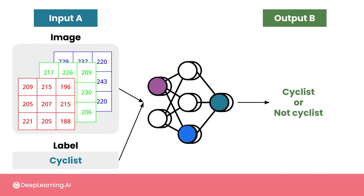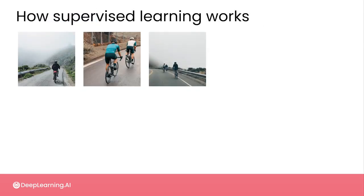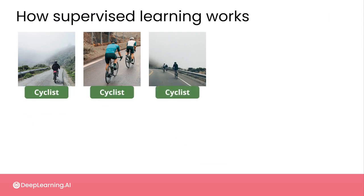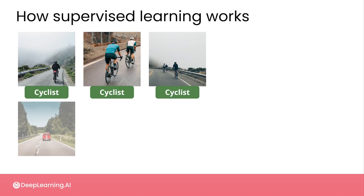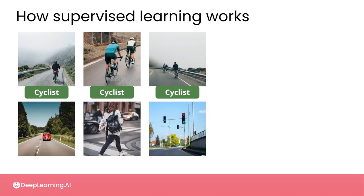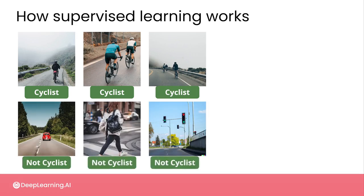This concept is at the heart of supervised machine learning. Namely, you can show your algorithm some data and also give it a label — in this case the label "cyclist" — and then show it other images that don't contain a cyclist and indicate those with the label "not cyclist."